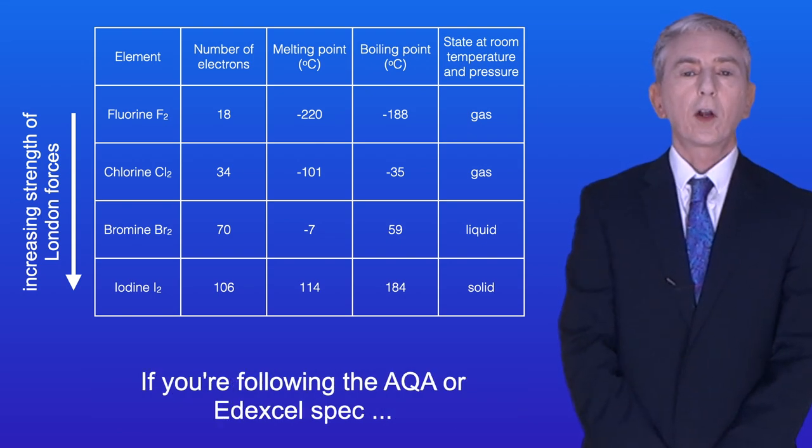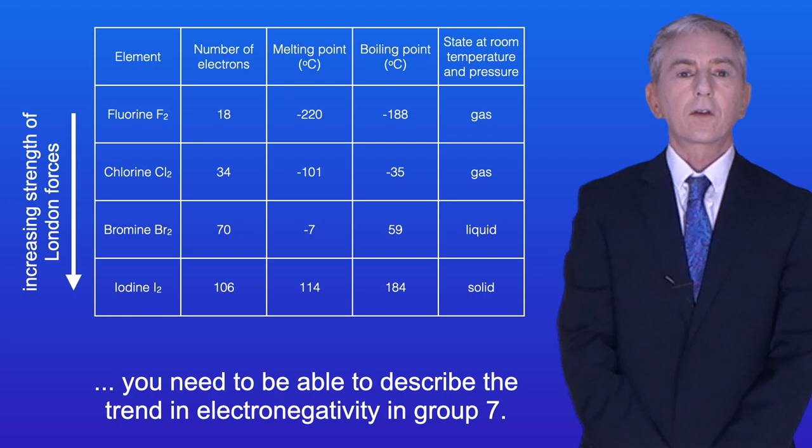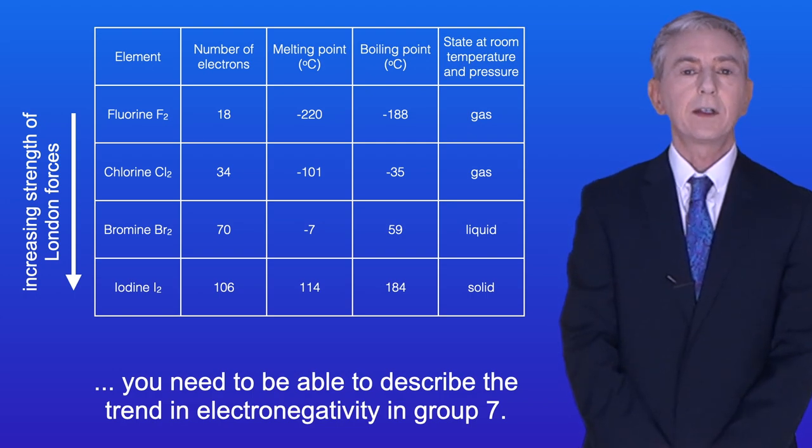Okay, now if you're following the AQA or Edexcel spec, you need to be able to describe the trend in electronegativity in Group 7.